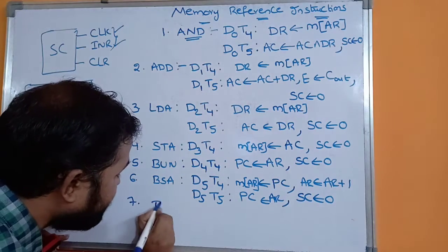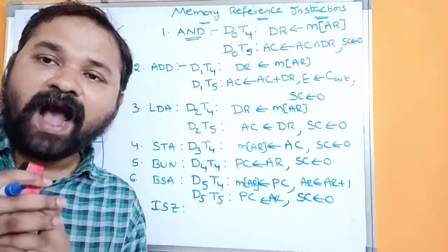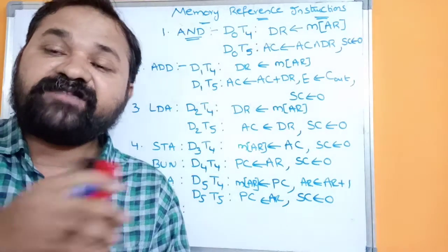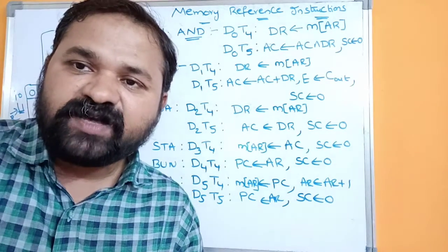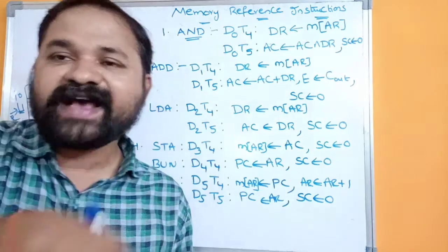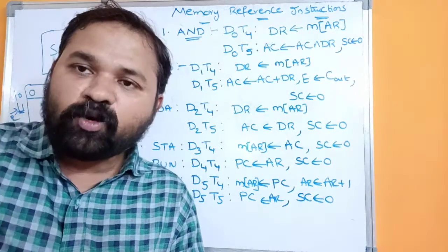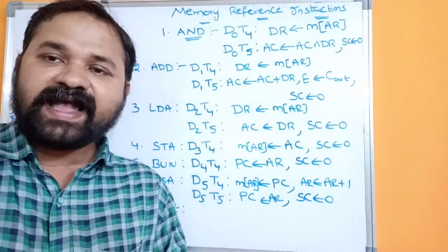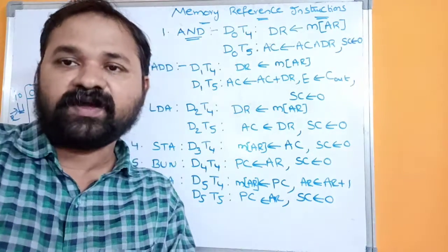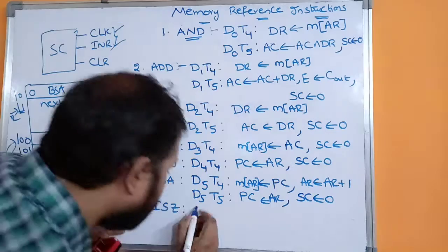The last instruction is ISZ, which stands for increment and skip if zero. We have to increment the content of the memory operand and skip the next instruction if the result is zero. But memory has only two control inputs — write and read — so we cannot directly perform an increment on the memory. We must transfer the memory content to the data register, increment the data register in the next clock pulse, then load the data register back to memory. Then check whether the data register content is zero.